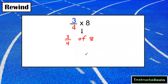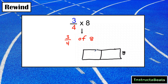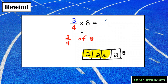If we were to show 3 fourths of 8 with a tape diagram, I would draw my group of 8 here with a part-whole model. My denominator tells me 4 equal groups, so I split it into 4 equal groups and shade in 3 of those. Splitting 8 into 4 equal groups gives 2 in each group, so 3 fourths of 8 equals 6.